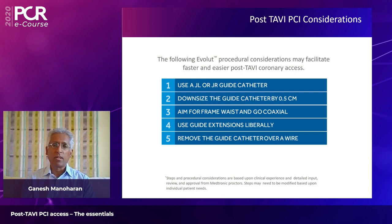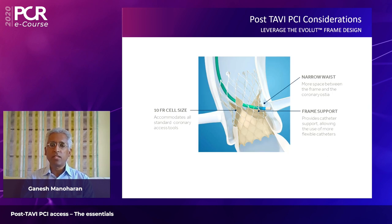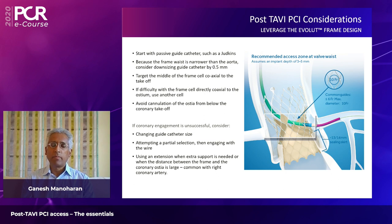To summarize: JL4 catheters are frequently used. Use six French rather than seven French. Try to get the frame coaxial to the coronary artery. Feel free to use extension catheters, and remember to keep the wire in before you disengage your guide. The Evolute frame has a waist that helps position the guide by creating space between the coronary ostia and the frame — it's about 10 French in size — and the CoreValve/Evolute frame is quite supportive once the guide is in position.